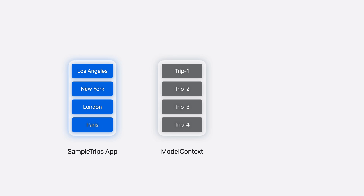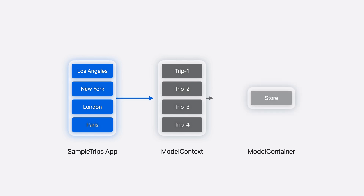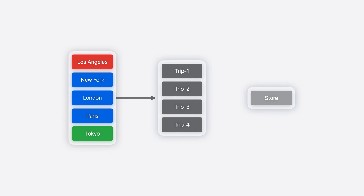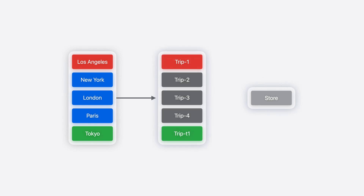SampleTrips uses a model context to power the view and display the trips. The model context instantiates persistent models for each trip in the view. Each of these trips also have a corresponding persistent identifier that uniquely identifies the model. The model context tracks the changes I make so they can be saved to the store when needed. For example, if I decide to cancel my trip to Los Angeles and also add a new trip to Tokyo, these changes are tracked by the model context. When the new Tokyo model is inserted into the model context, it is identified by a temporary persistent identifier.